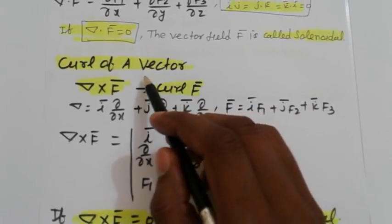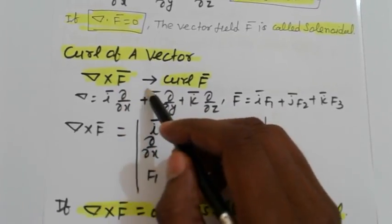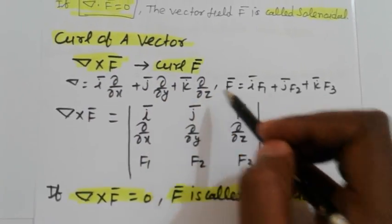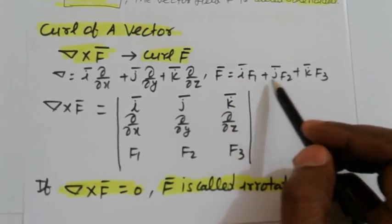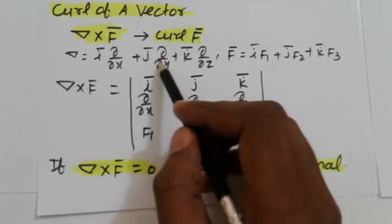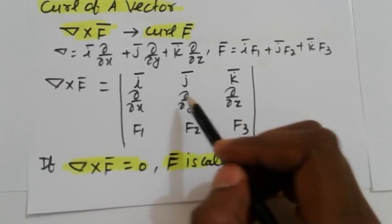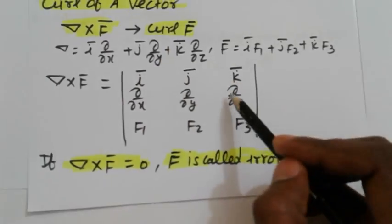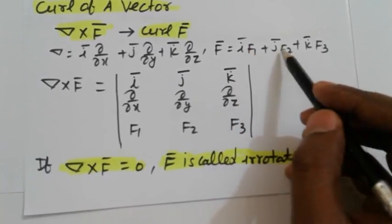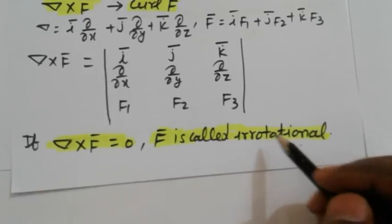Curl of vectors: curl of F is denoted by nabla cross F. Nabla = i(∂/∂x) + j(∂/∂y) + k(∂/∂z) and F = F1·i + F2·j + F3·k. Nabla cross F is expressed as a determinant with rows: [i, j, k], [∂/∂x, ∂/∂y, ∂/∂z], [F1, F2, F3]. If nabla cross F equals zero, then F is irrotational.